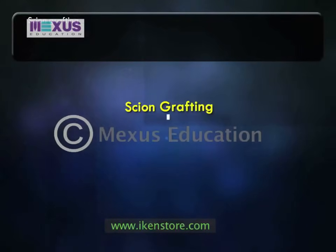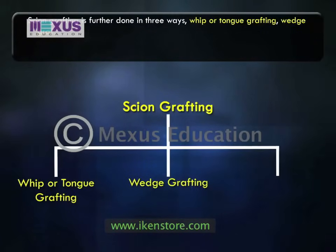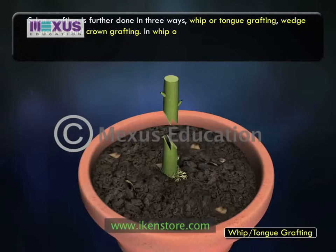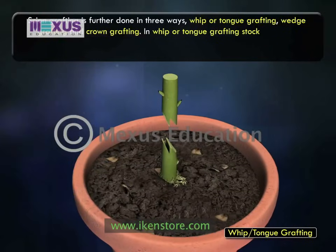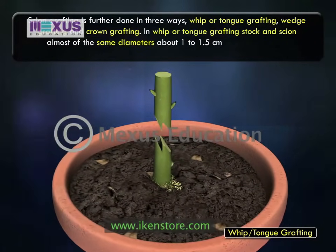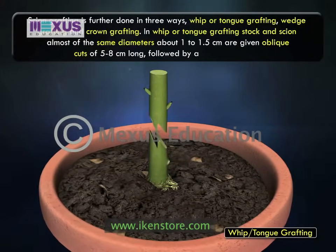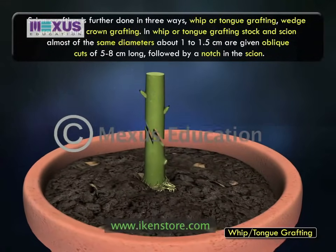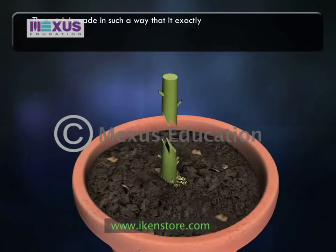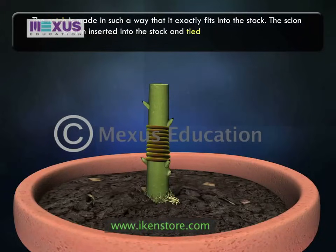Scion grafting is further done in three ways: whip or tongue grafting, wedge grafting and crown grafting. In whip or tongue grafting, the stock and scion, almost of the same diameter of 1 to 1.5 cm, are given oblique cuts of 5 to 8 cm long, followed by a notch in the scion. The notch is made in such a way that it exactly fits into the stock. The scion is then inserted into the stock and tied firmly.